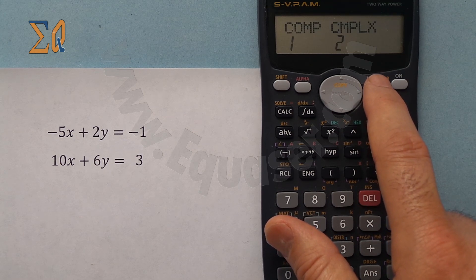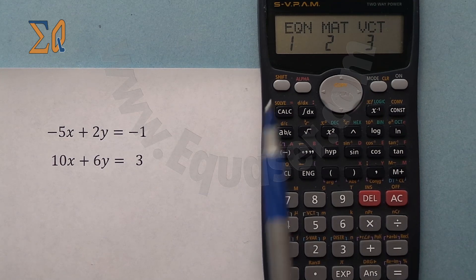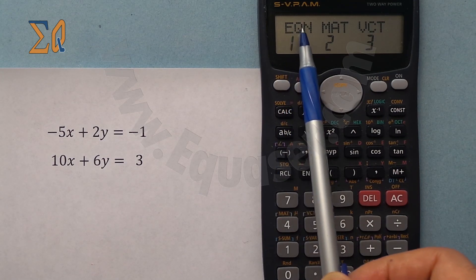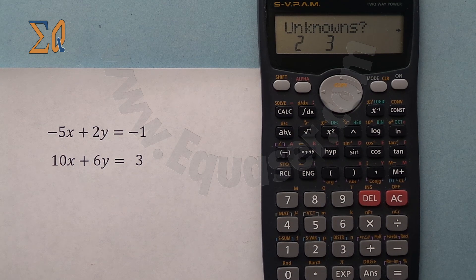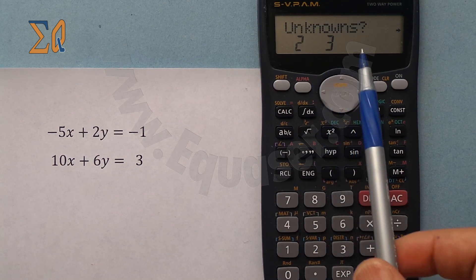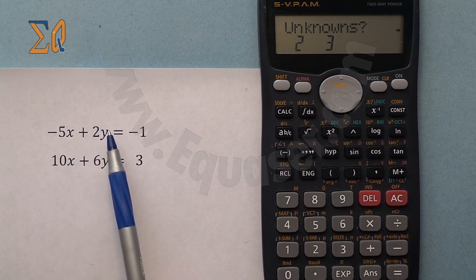So that means I press 1. Now this screen is asking me how many unknowns we got. Because I have two unknowns x and y, so I press 2.